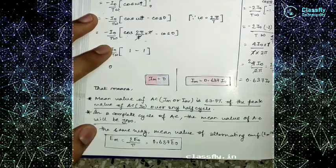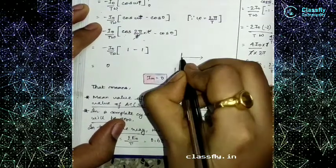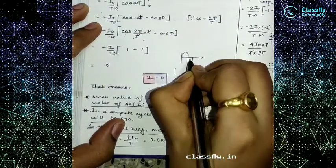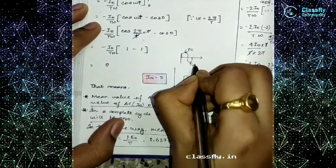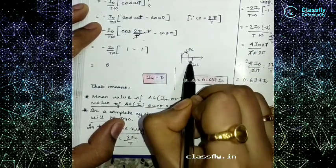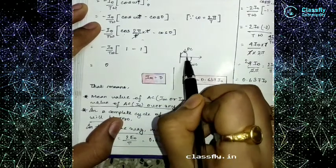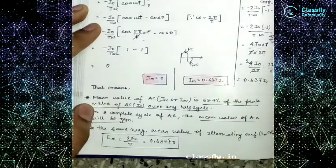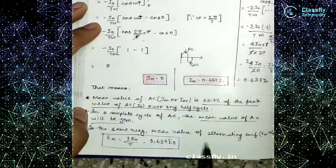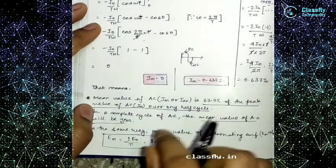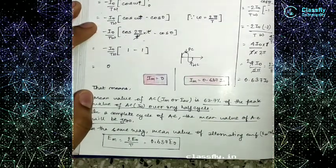Whenever we do the full cycle, we know beforehand that there is a positive half cycle and a negative half cycle. When we solve, the positive half cycle and the negative half cycle nullify each other, so whenever we do the full cycle we get 0 as an average. I did both of them parallelly so you can get a clear concept. Try to do it parallelly so that you have a clear concept.